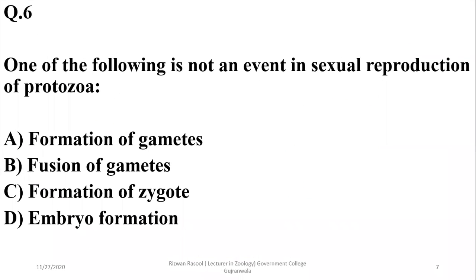Question six: which of the following is not an event in sexual reproduction of Protozoa? Protozoa form gametes, their gametes fuse with each other, and a zygote is formed. However, embryo formation is not a feature of protozoan sexual reproduction. So the correct option is B.